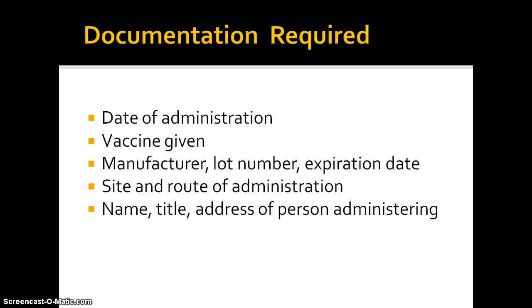Documentation of vaccines requires: the date of administration, the vaccine given, the manufacturer, lot number, and expiration date on every vaccine. Also document the site and route of administration, and the name, title, and address of the person administering the vaccine. If you're giving the vaccine at your clinic or hospital, you can write that information in as an employee.